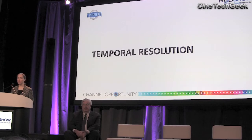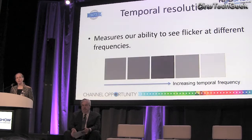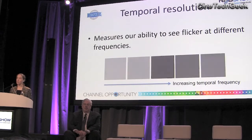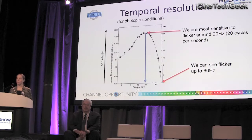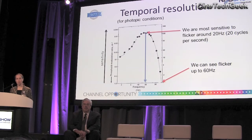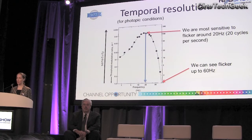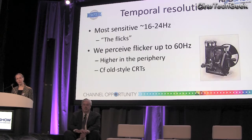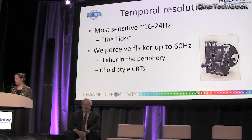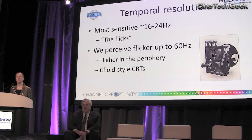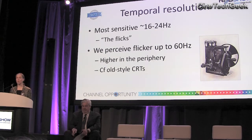Moving on to temporal resolution — we can talk about our ability to see flicker at different frequencies. We can measure a temporal contrast sensitivity function in exactly the same way as we did for spatial. It turns out that we're most sensitive to flicker at around 20 Hz, and we can see flicker up to 60 Hz. It's quite unfortunate that early cinema, for technical reasons, was limited to frame rates of about 16 to 24 Hz — one flash at a time. You can see why early cinema was known as 'the flicks': it put flicker right where we're most sensitive to it.